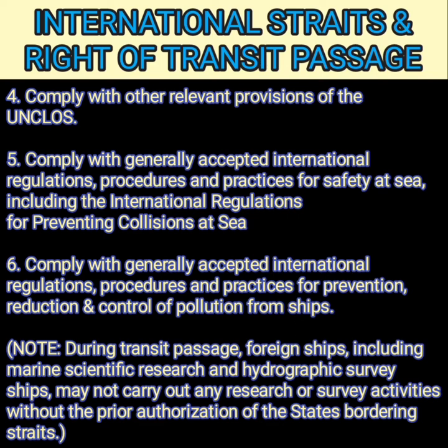Transiting ships must comply with generally accepted international regulations, procedures, and practices for safety at sea, including the international regulations for preventing collision at sea. They must also comply with generally accepted international regulations and procedures for the prevention, reduction, and control of pollution from ships. During transit passage, foreign ships — including marine scientific research and hydrographic survey ships — may not carry out any research or survey activities without prior authorization of the states bordering the straits.